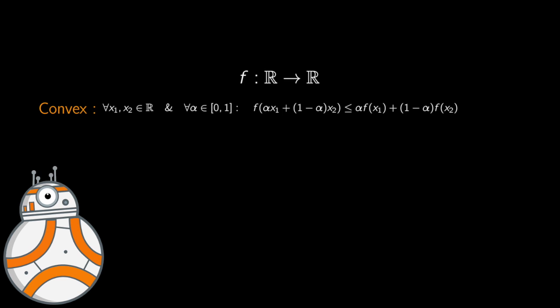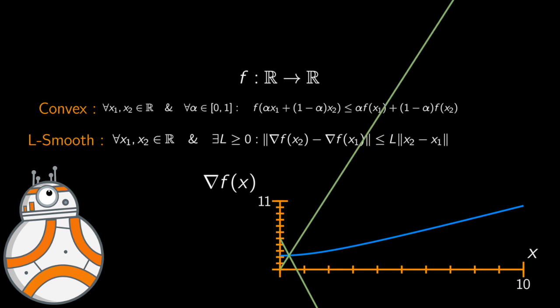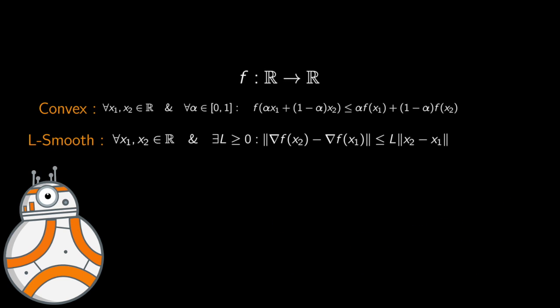The other condition we impose is that the function is L-smooth, meaning its gradient is Lipschitz continuous. For any two points you grab in ℝ, you can find a positive number L such that the norm of the difference of the gradient on those two points is upper bounded by L multiplied by the norm difference of those two points. This means the gradient is Lipschitz continuous—you can always find a double cone that can be moved along the graph so the whole graph stays outside the double cone.